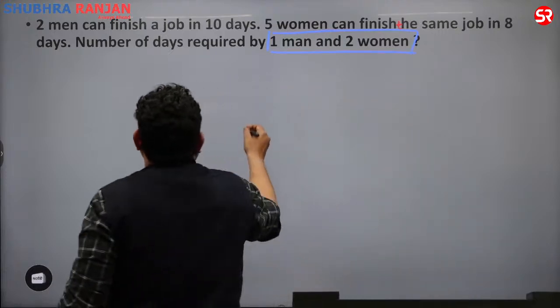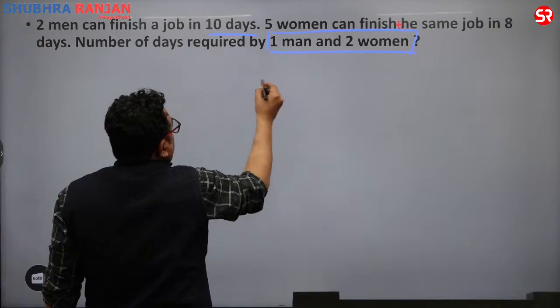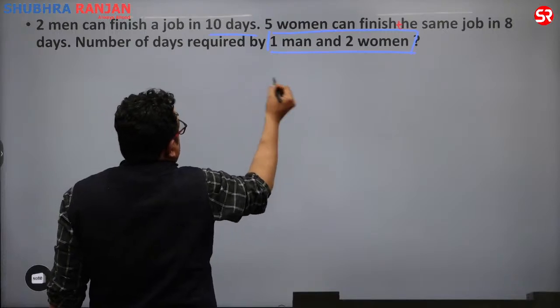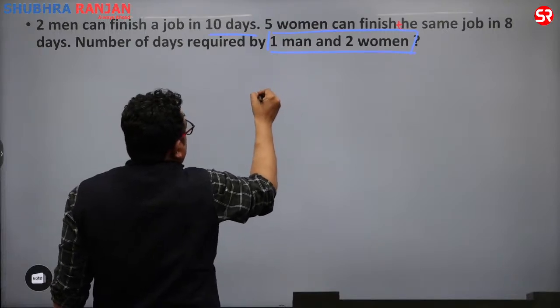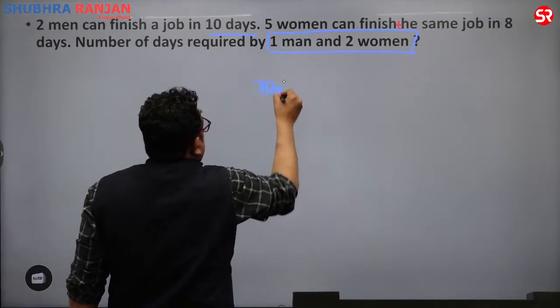2 men can finish a job in 10 days. So total work in terms of men equals 2 × 10 equals 20 man days. In case of women, total work equals 5 × 8 equals 40 women days.